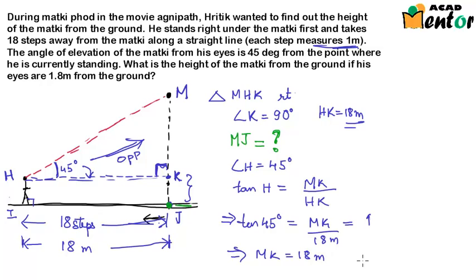So I can write KJ is equal to HI and is equal to 1.8 meters because the height of his eyes is given as 1.8 meters. HI is 1.8 meters, so is KJ.